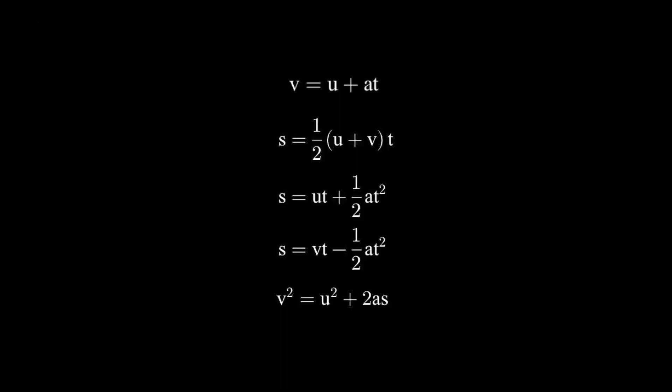So just to recap when you're answering a SUVAT question. Step one, draw a diagram. Step two, super important. Note down the three variables that they give you. The variable that you want to work out and the variable that you don't need. And step three, use the equation that doesn't involve the irrelevant variable.